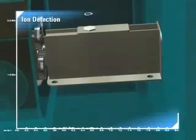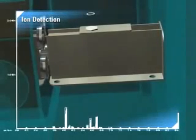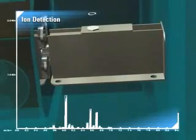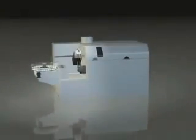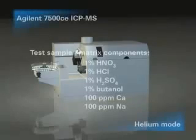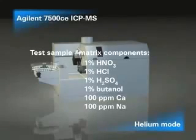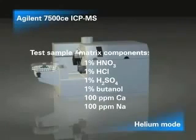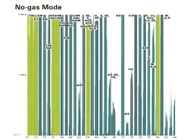Ions strike the detector and the resulting electronic signals are processed by the detector electronics and stored in a multi-channel scalar, creating a mass spectrum where intensity at a given mass is proportional to the concentration of the isotope at that mass. To illustrate the interference removal power of the helium mode, a very challenging sample matrix containing these components was analyzed. Spectra were obtained for the mid-mass range where most polyatomic interferences occur. This spectrum shows the matrix interferences that occur in normal ICP-MS.